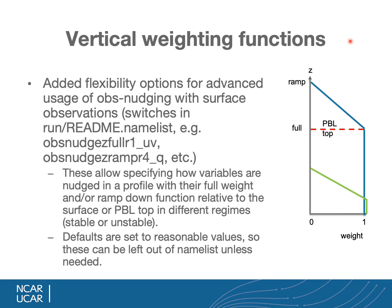For advanced usage when nudging surface data, there are switches controlling how the surface field effect ramps into the atmosphere. These are named obs_nudge_full and obs_nudge_ramp for each variable, with a regime number — for example, 1 for stable and 4 for unstable conditions. You control the full height and ramp height, where the full height can go from the PBL top or to some lower level below the PBL top. Default values are fine for most users, but these options allow you to change the weighting of surface observations with height.